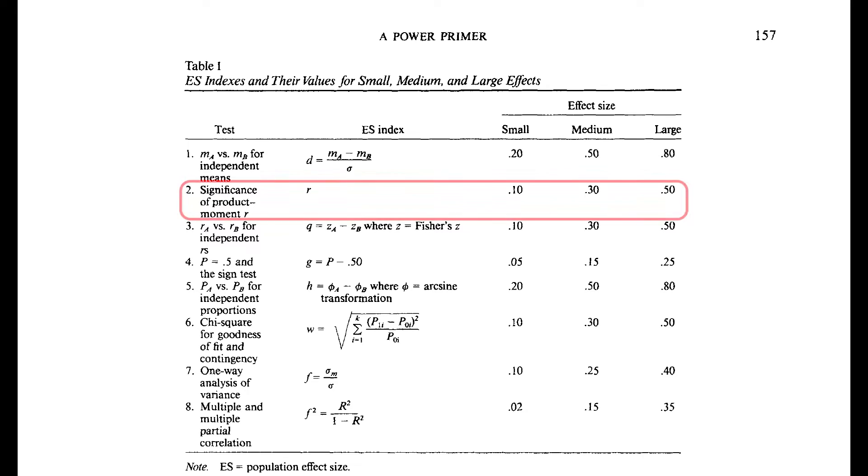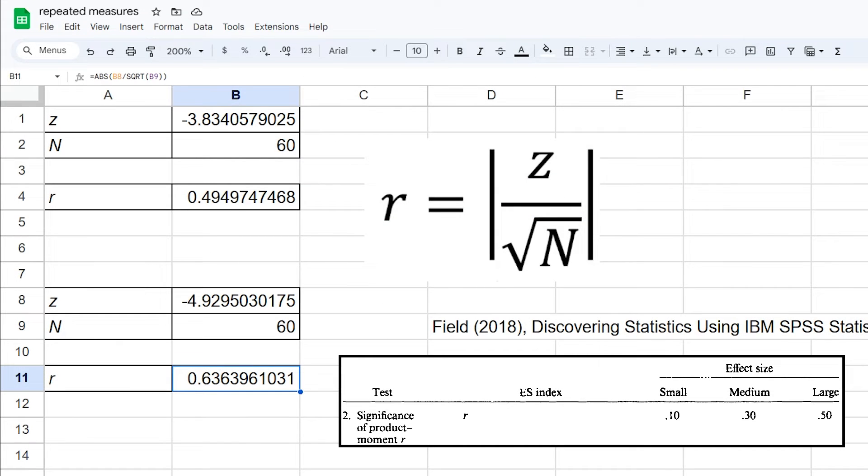Page 157 shows three thresholds for the effect size R: 0.1, 0.3, and 0.5 for small, medium, and large effects. In my example, I have basically two large effects if I use Cohen's thresholds.